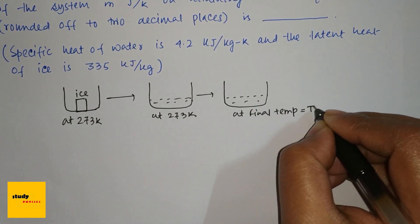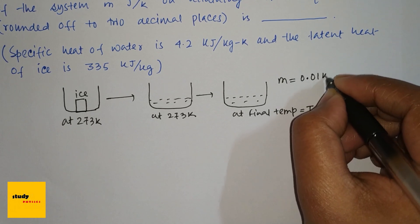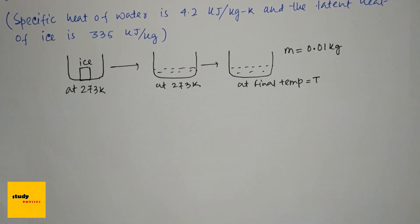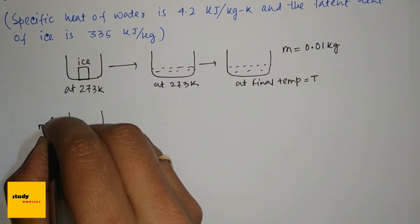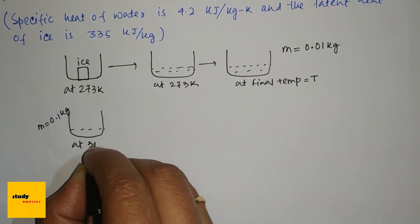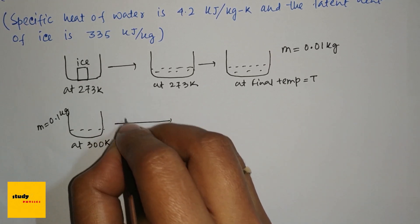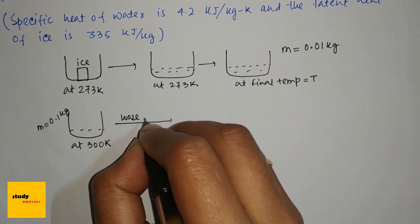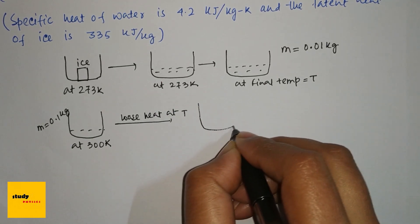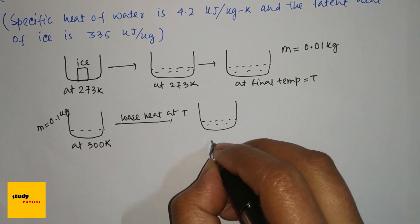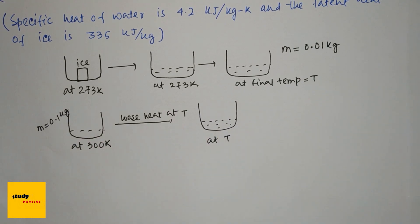Here, the mass of the ice is 0.01 kg and 0.1 kg of water at 300 Kelvin. It loses heat at T, so the final will be at T Kelvin.